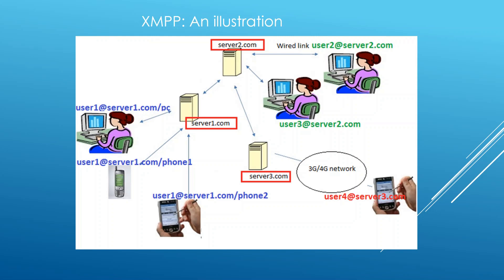We have different kinds of links in the network. We have wired links here — the PCs connect to the server through a wired link like broadband or something. And we have wireless links like a 3G network here.